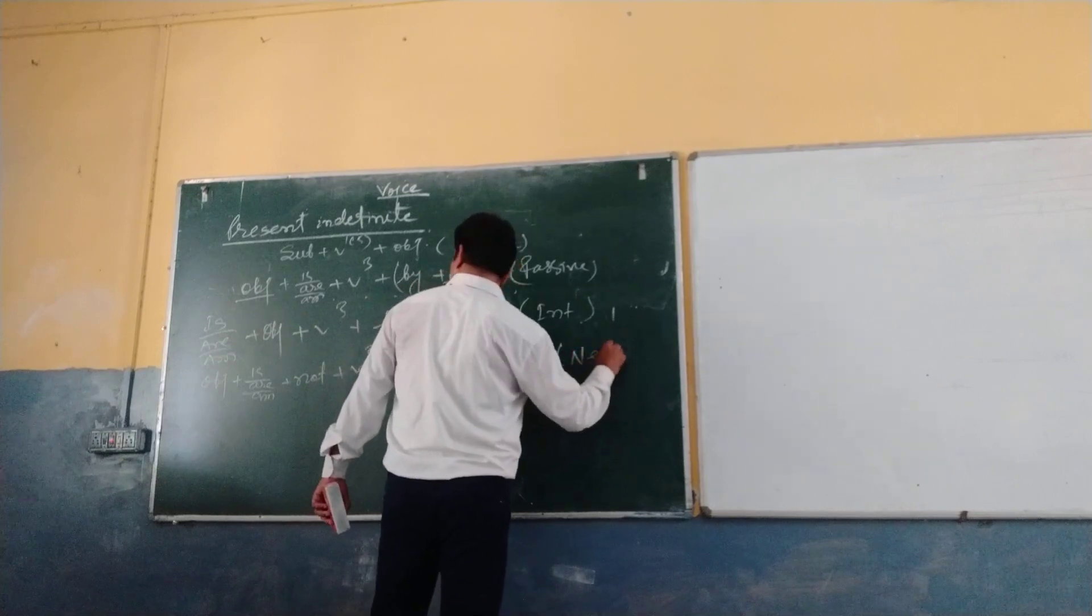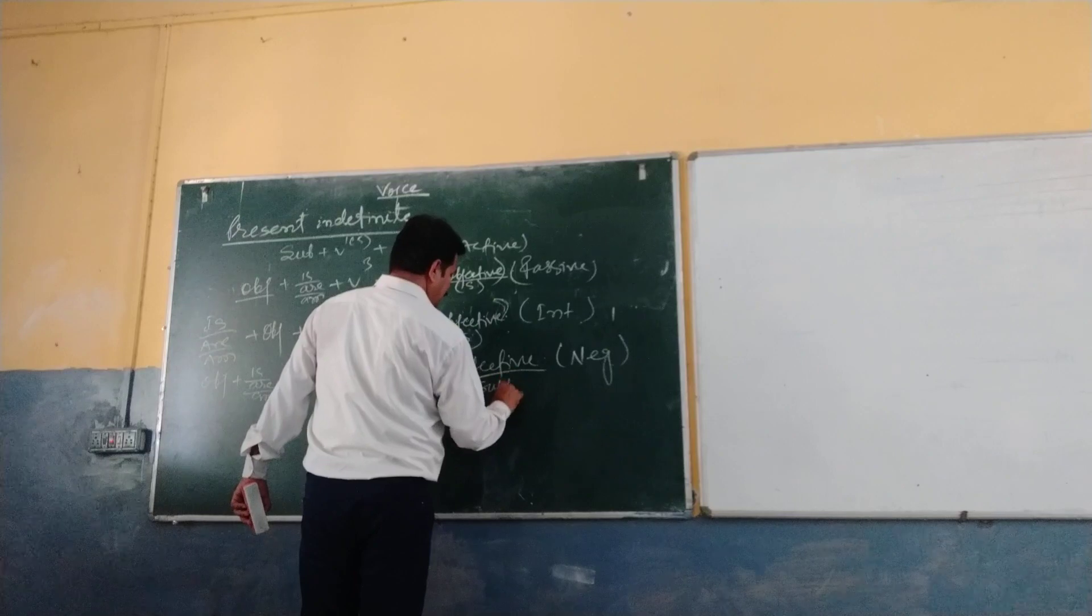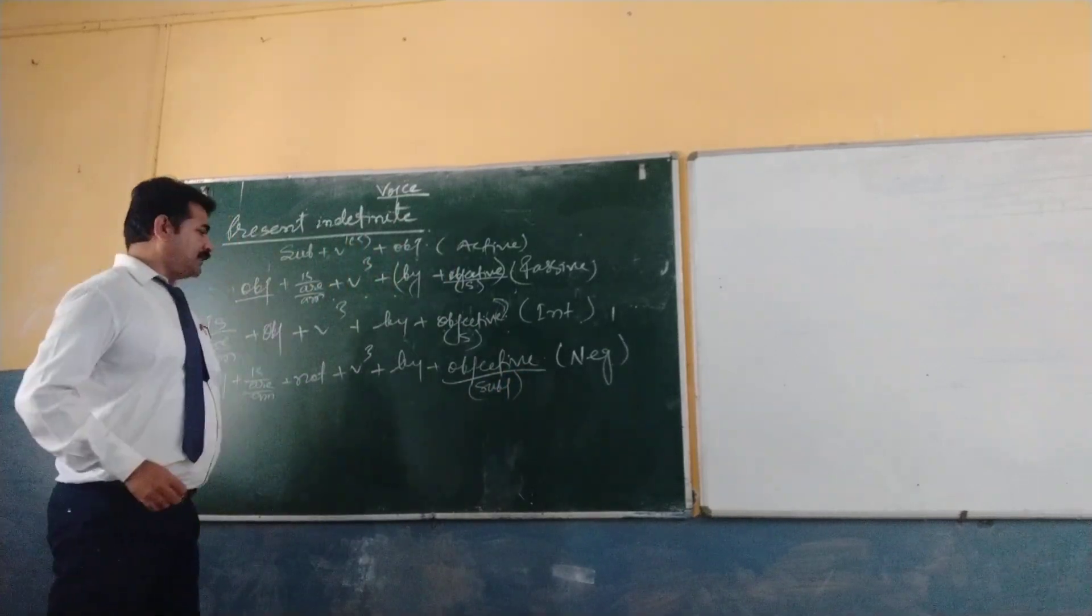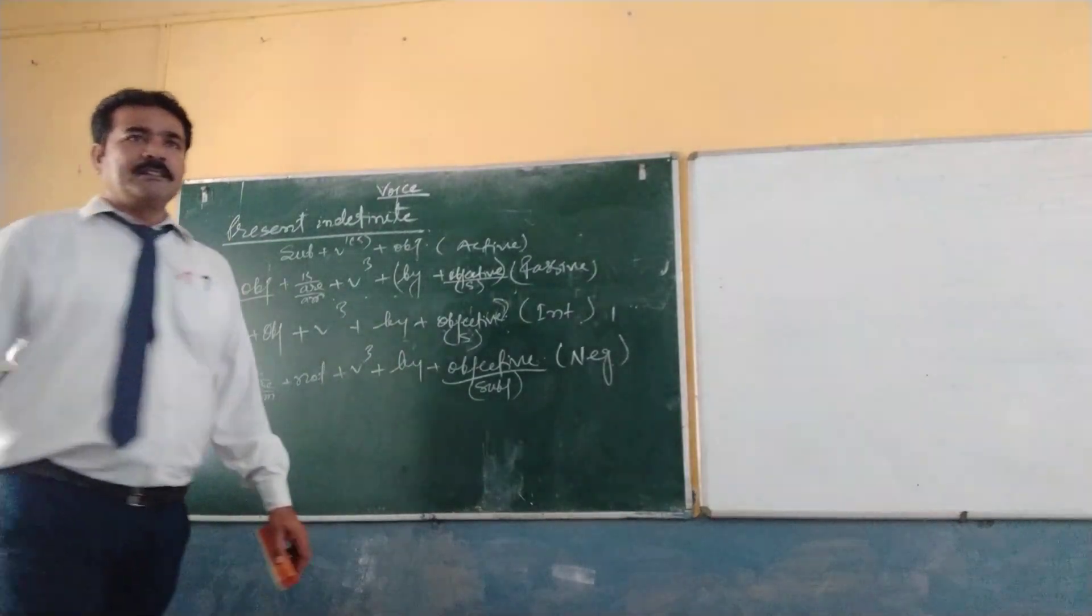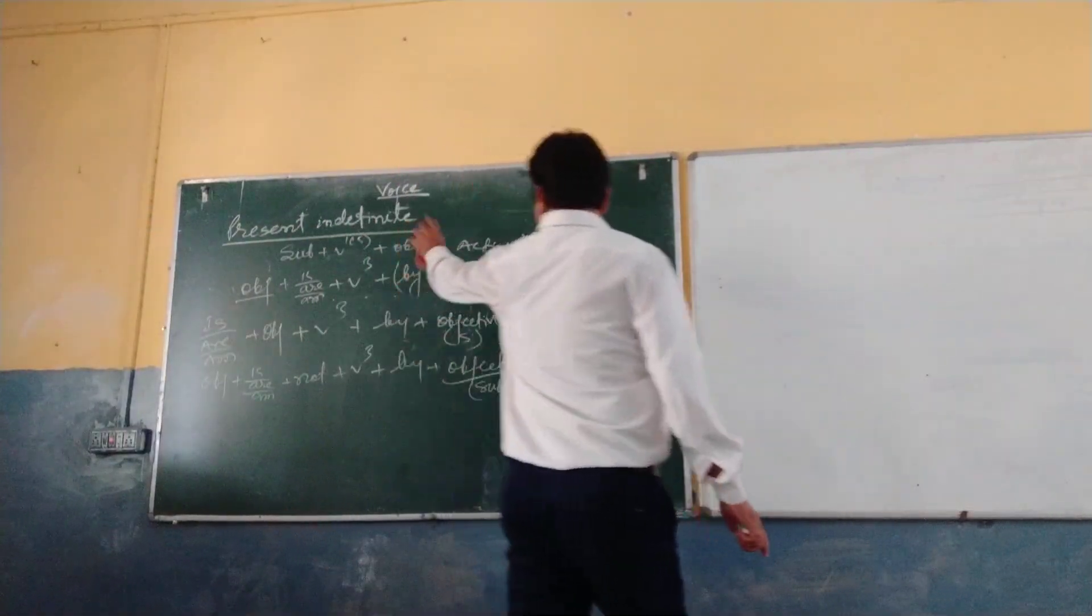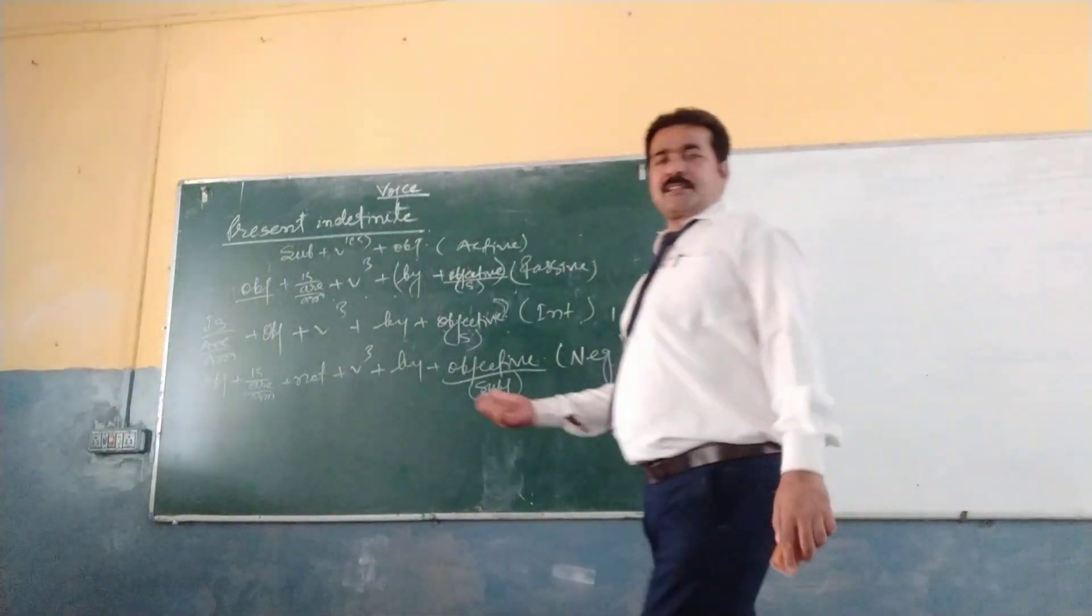This is here negative. This is for negatives. You should write here subject. For the subject. Is it clear? Yes. No matter? So this is your presently different. Now we shall go for the present continuous.